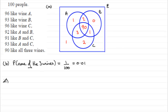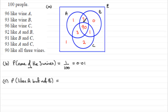Part C asks us the probability they like A but not B — P(likes A but not B). So we've got to be outside of B and inside A. That gives us the one and the three. So it's going to be a total of four people that like A but not B, out of 100. So that's 4/100 or 0.04.